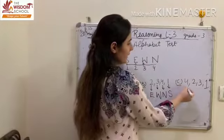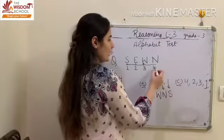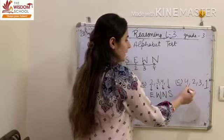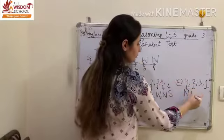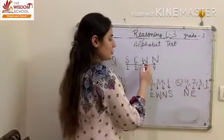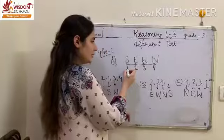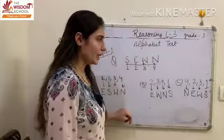So, अब हम option C की बात करेंगे. You have to look for number 4. Number 4 हमने किसको दिया है बच्चो? N को. Then, number 2, it is given to E. Number 3 किसको दिया है हमने बच्चो? W को. And number 1, you have to check here. Number 1, it is alphabet S.